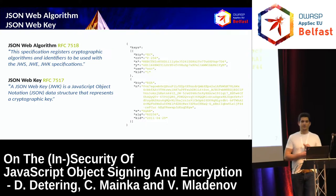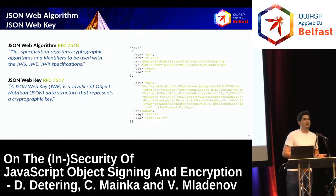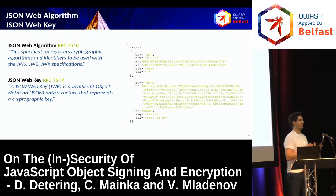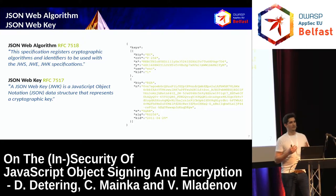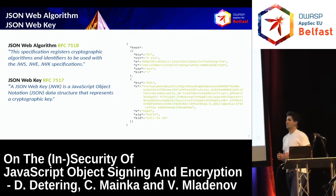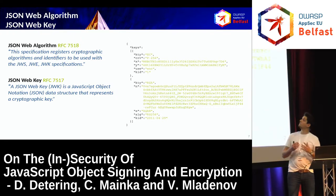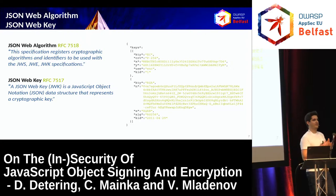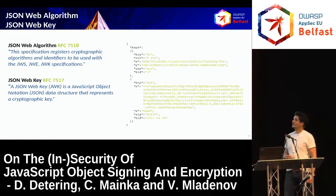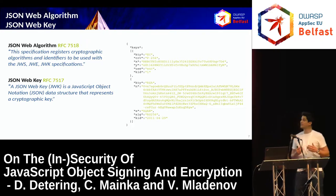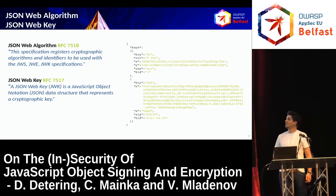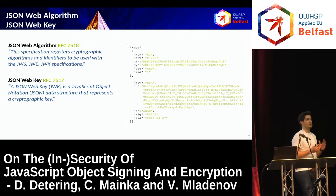The first standard is JSON Web Algorithm, which specifies which algorithms can be used with signatures and encryption, and which additional parameters are necessary. The second is JSON Web Key, a specification for representing a cryptographic key in JSON format. On the right side is an example of a JSON Web Key Set containing multiple keys — an elliptic curve public key and an RSA public key, all in JSON-based format.